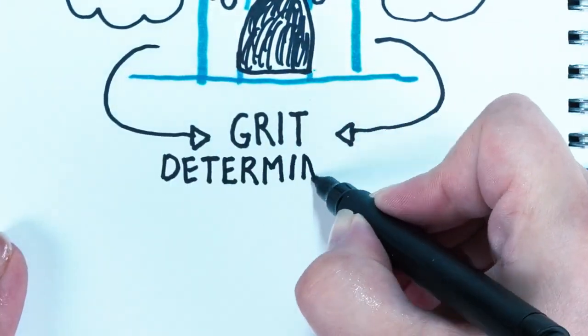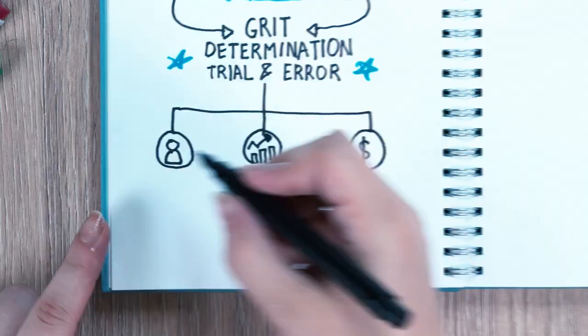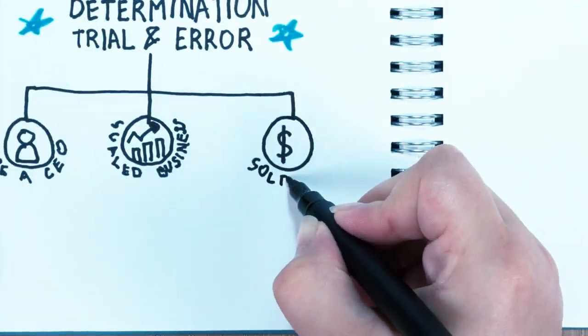Through grit, determination, and a lot of trial and error, David was able to replace himself, hire a CEO, scale his business to new heights, and sell it for top dollar.